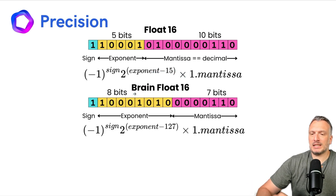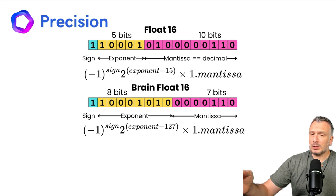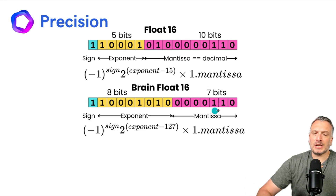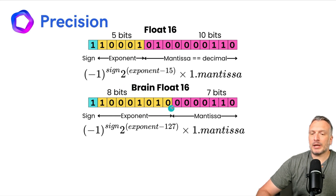Now let's look at Brain Float16, or Bfloat16. With Bfloat16, we also represent a floating point number with 16 bits, but instead of allocating 5 bits to the exponent, we allocate 8 bits — the same as Float32. This means we need fewer bits for the mantissa, so we allocate only 7 bits. Bfloat16 has less precision because it can represent fewer decimals, but it has the same range as Float32. In comparison, Float16 does not have the same range but is more precise. The formula for Bfloat16 is the same as Float32 since we have the same number of bits allocated to the exponent.